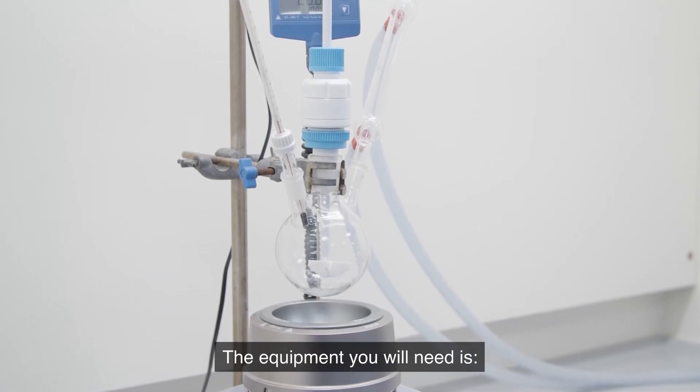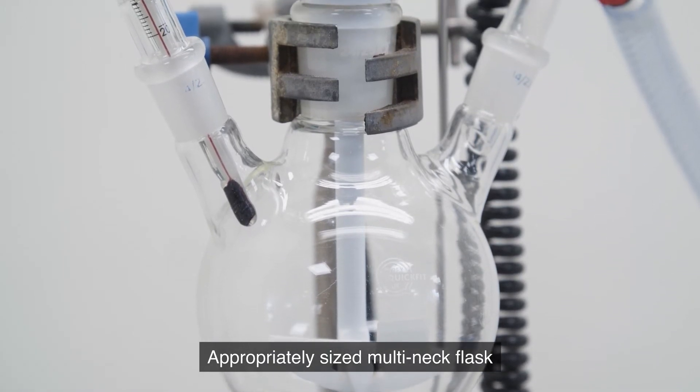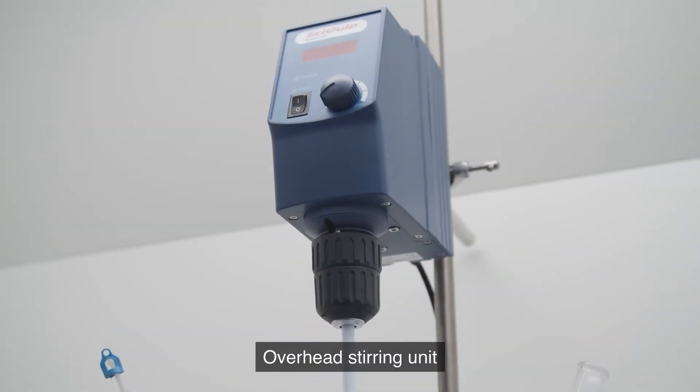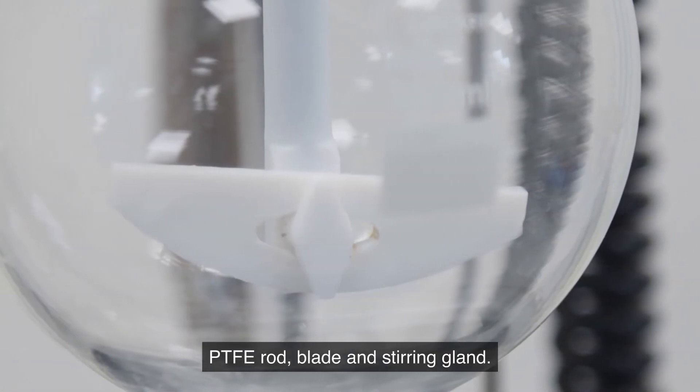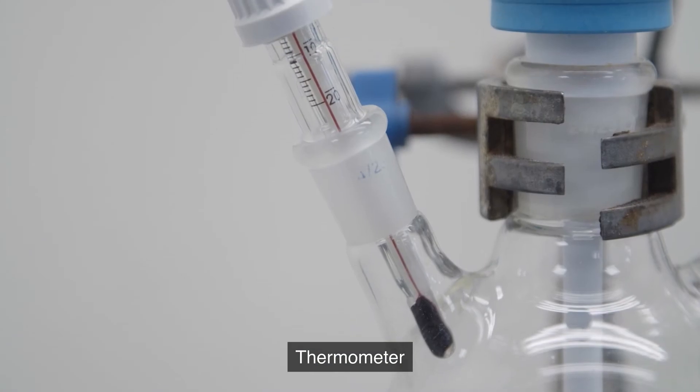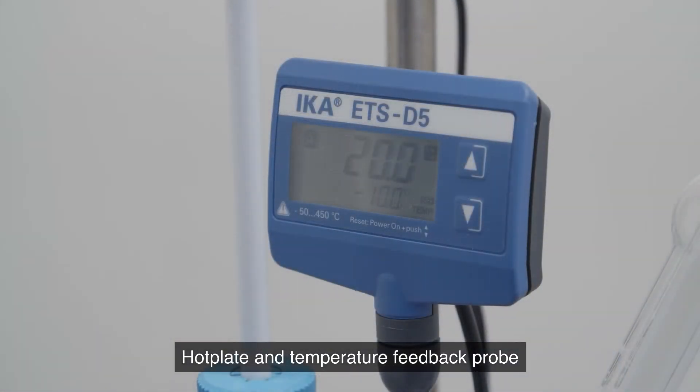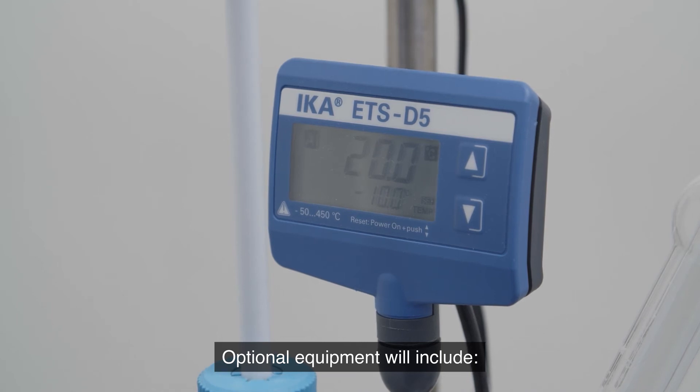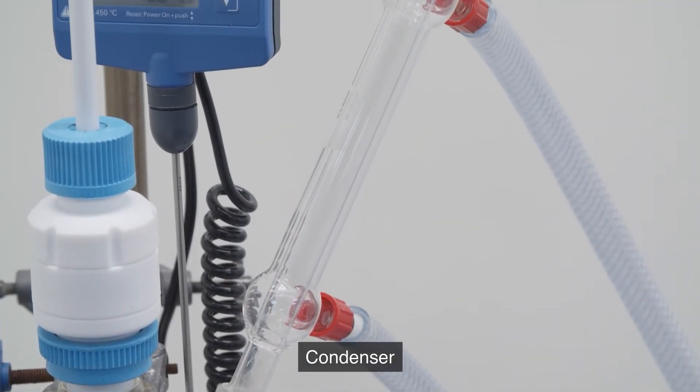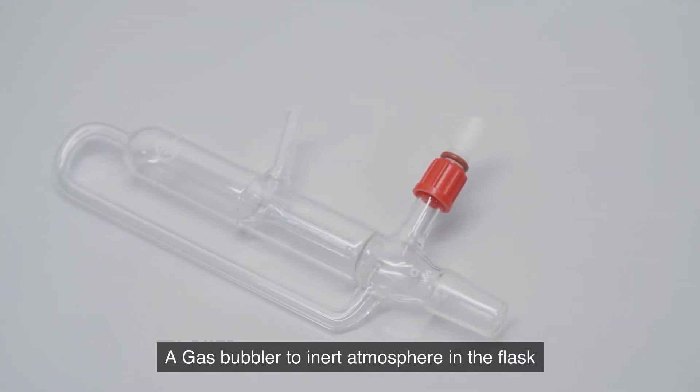The equipment you will need is appropriately sized multi neck flask, overhead stirring unit, PTFE rods, blade and stirring gland, thermometer, hot plate and temperature feedback probe. Optional equipment will include condenser and a gas bubbler to inert the atmosphere in the flask.